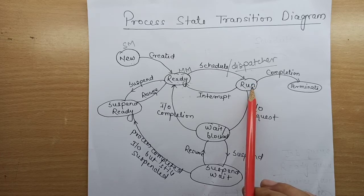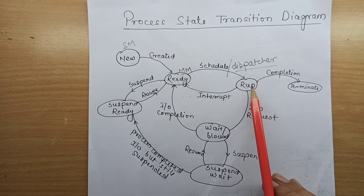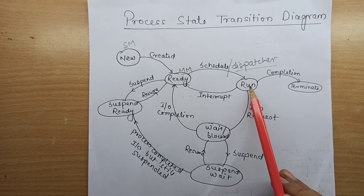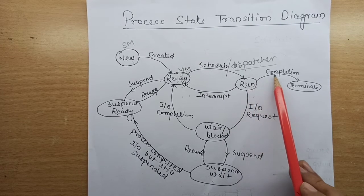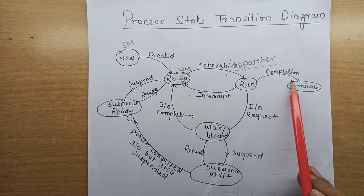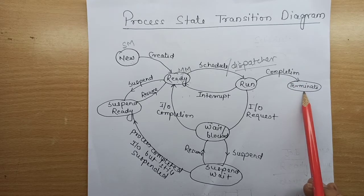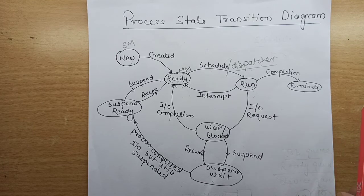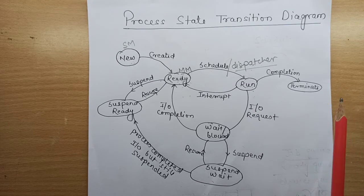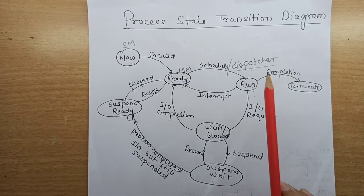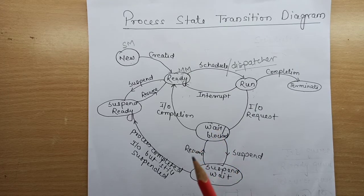If a process only needs CPU computation and no I/O operation, it will execute on the CPU and once completed, it will move to the terminate state. The terminate state is when the process is dead — it is no longer in main memory; it has completed its task and exited. These are the four basic states.